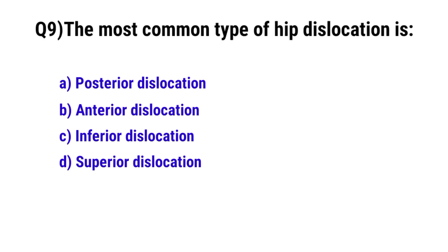Question No. 9. The most common type of hip dislocation is? The correct option is A: Posterior dislocation.